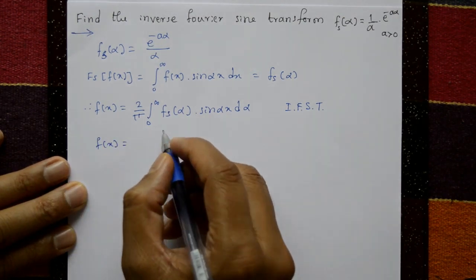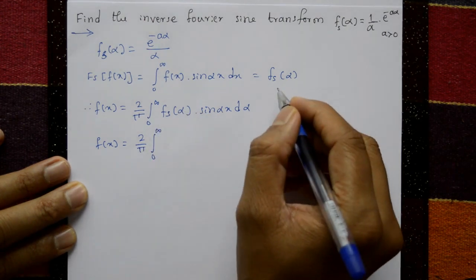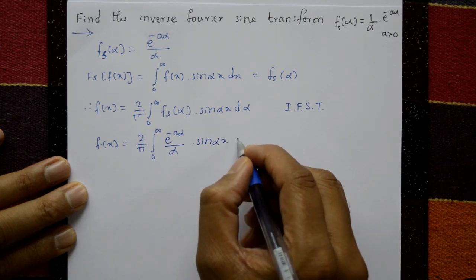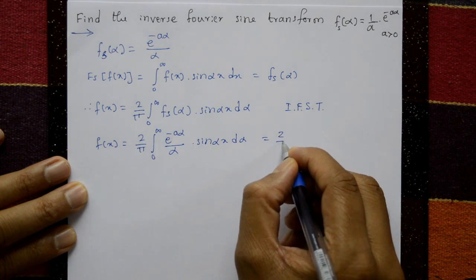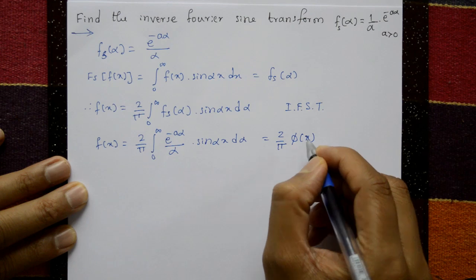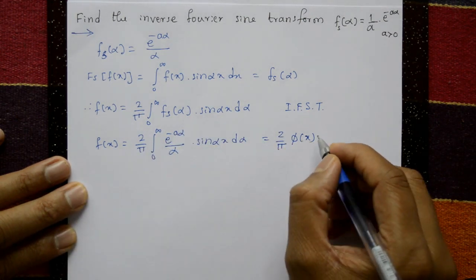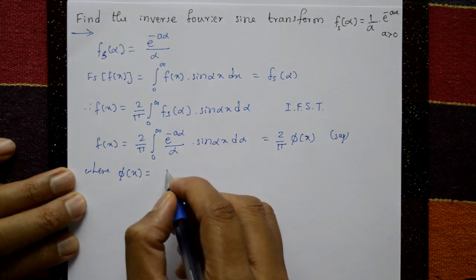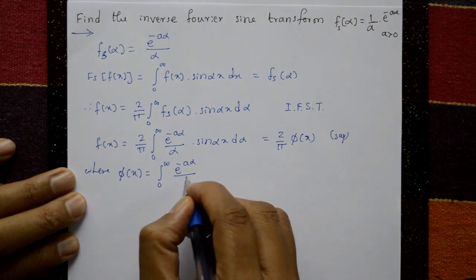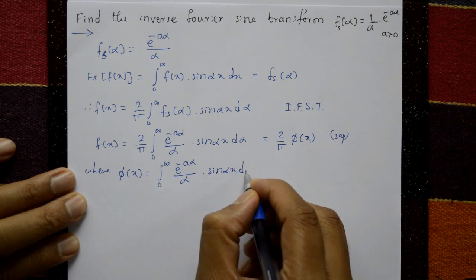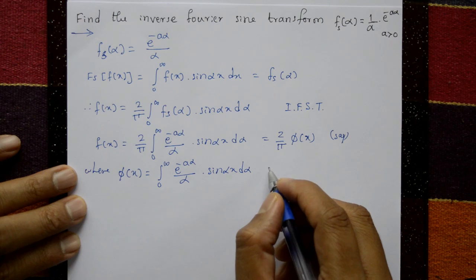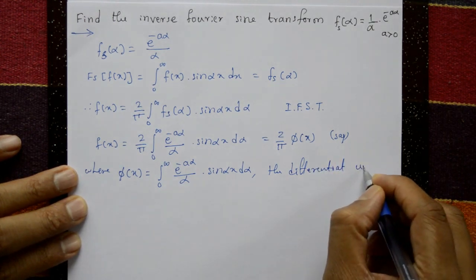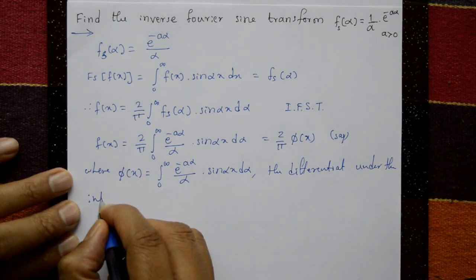Shortcut approach: f(x) = (2/π) ∫₀^∞ [e^(−aα)/α] sin(αx) dα. This cannot be integrated directly, so we use differentiation under the integral sign. Let φ(x) = ∫₀^∞ [e^(−aα)/α] sin(αx) dα.